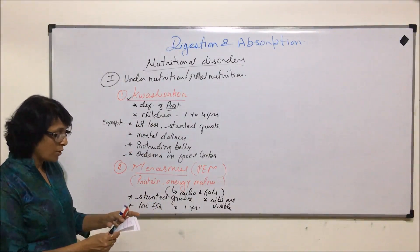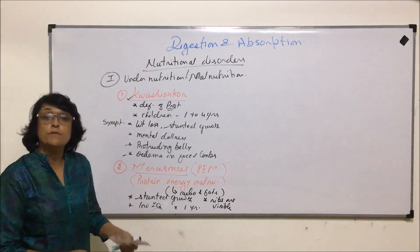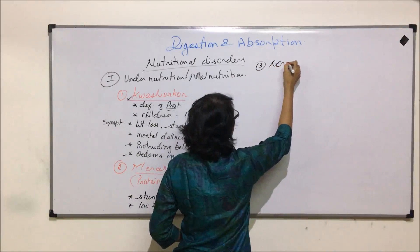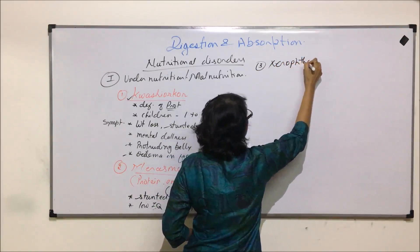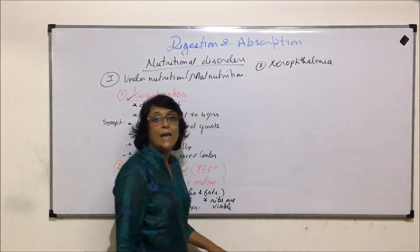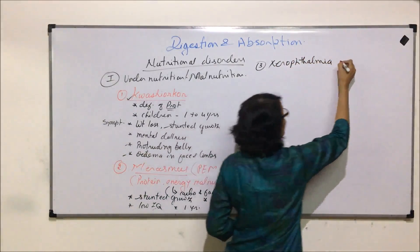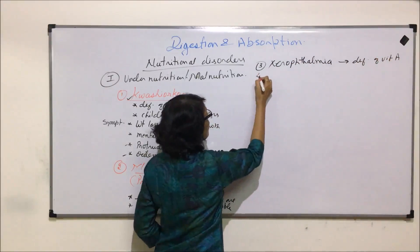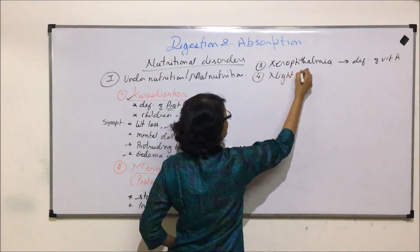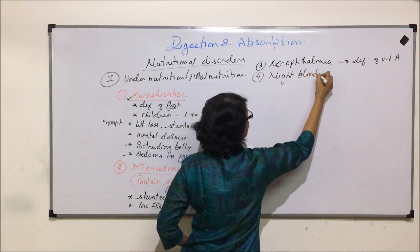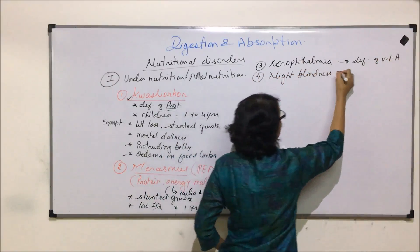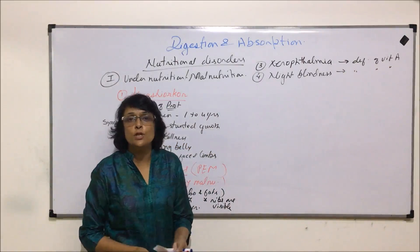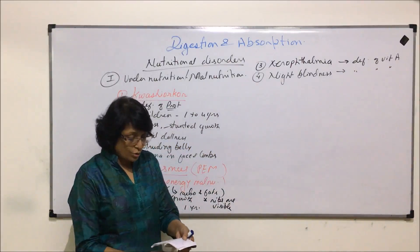We have already discussed a few more disorders; we'll just list them here. Xerophthalmia — drying of the eyes due to deficiency of vitamin A. Night blindness is also due to deficiency of vitamin A, where dim-light vision gets affected.